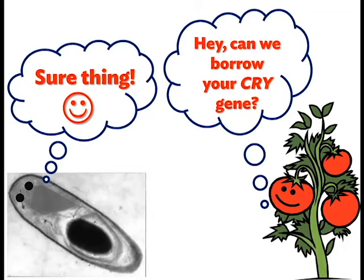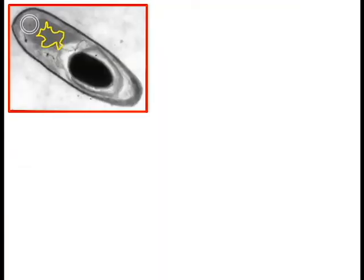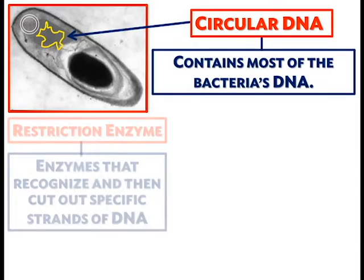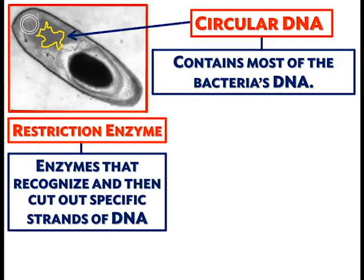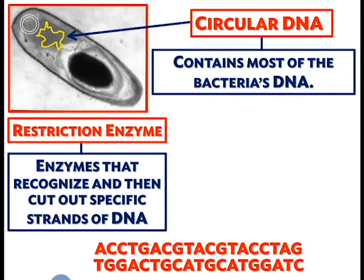This process can be divided into three major steps. Step 1: Restriction incision. First, we're going to take a pair of molecular scissors to cut out the segment of the bacteria's circular DNA that codes for the production of the crygene. These scissors are called restriction enzymes, which recognize and cut out specific short strands of DNA.